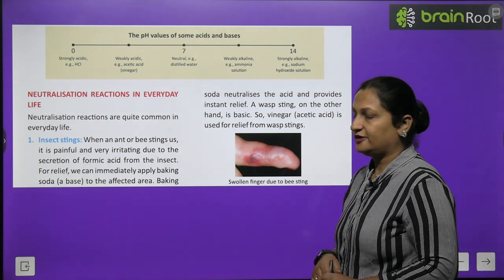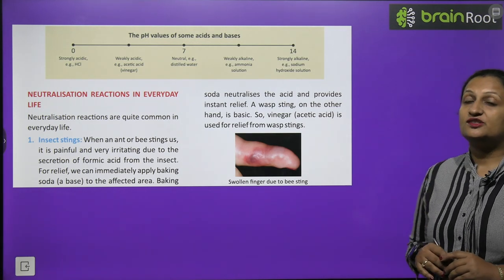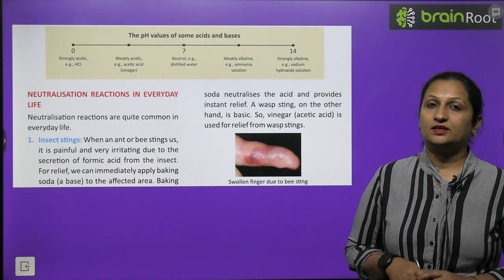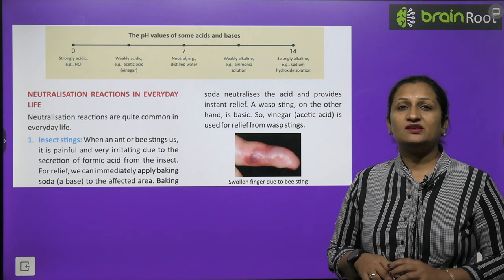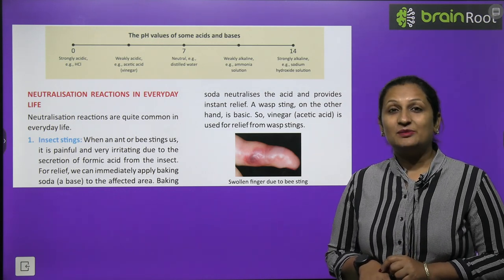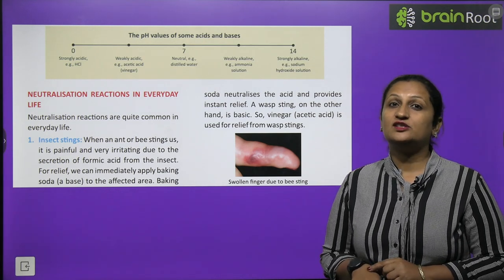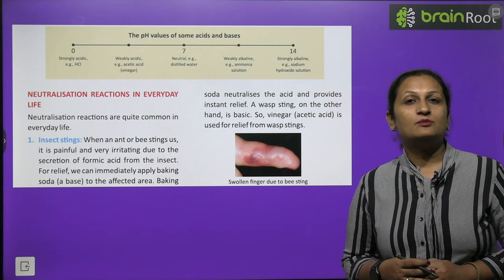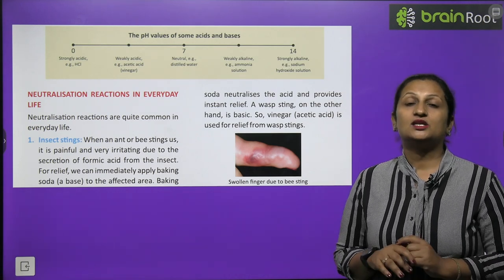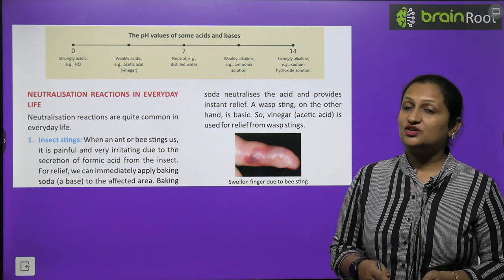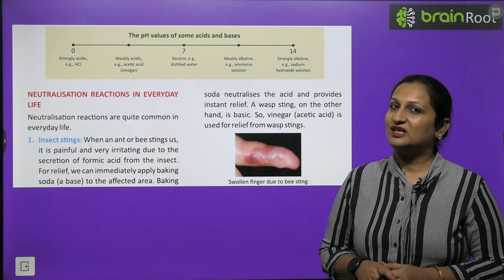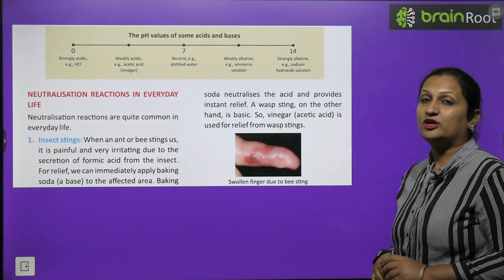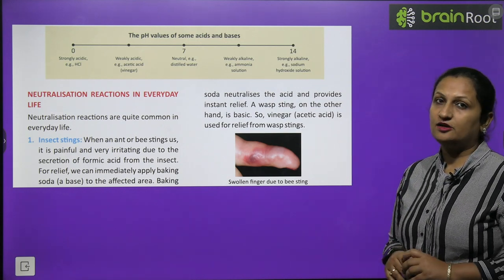Neutralization reaction in everyday life. Insect sting: Sometimes if an ant bites you or a bee stings you, what happens is that bee sting releases acid in your body, that is formic acid. For formic acid, what does mother do? Apply something on it. We have to wash it with soap solution. What will happen? In ant sting or bee sting, an acid was released in our body, formic acid. If we neutralize it by applying a base, like we apply baking soda or soap on it, what will happen? Neutralization reaction will occur, salt will be formed, water will be formed, and we will get relief. But if a wasp bites us, in wasp sting, it releases a base in our body, then we should use vinegar for effective relief.